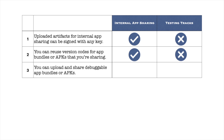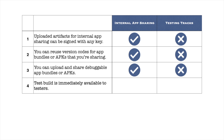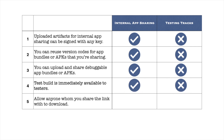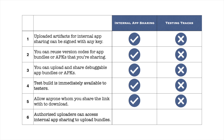You can upload and share debuggable app bundles or APKs for testing because these build files are not going to be published. The uploaded app bundle for internal app sharing is immediately available to your testers because there is no Google review at this stage. And mainly, you can allow anyone whom you share the link with to download the app on their devices, not restricted to only testers' email lists.